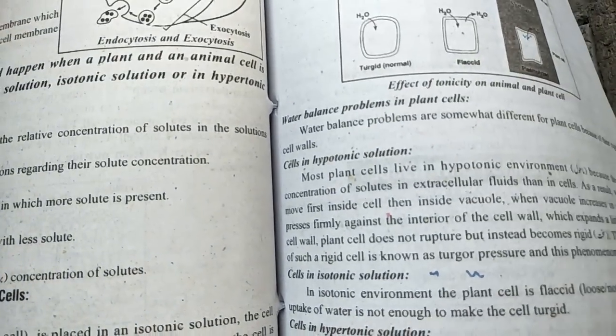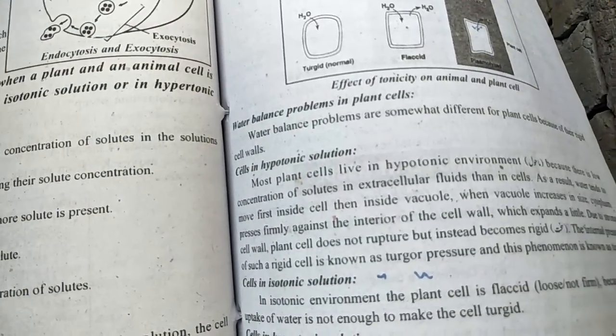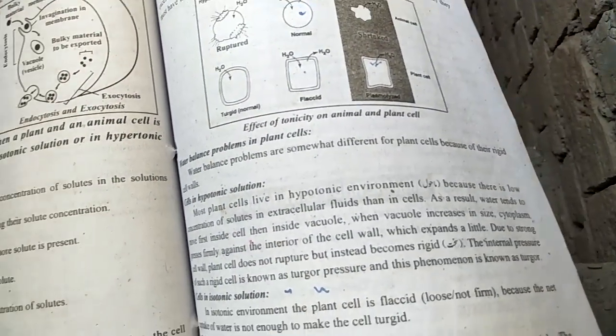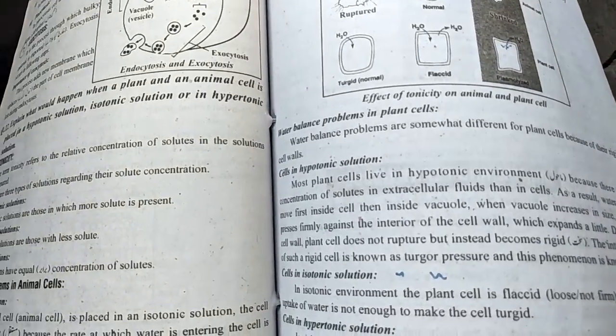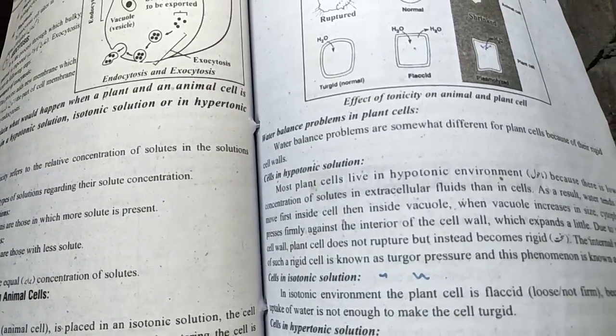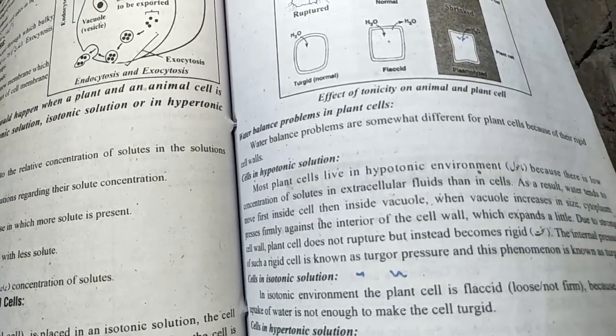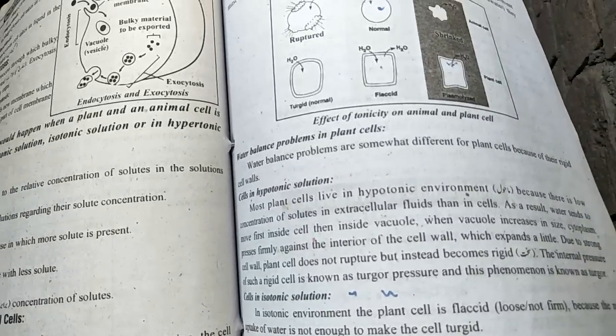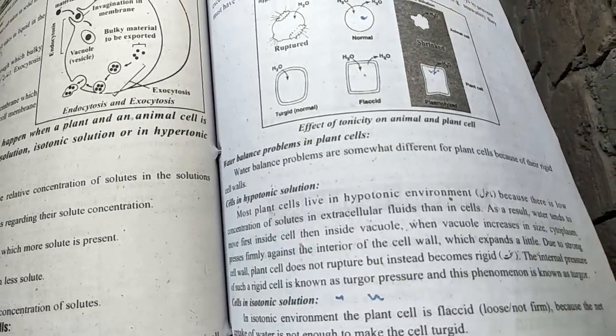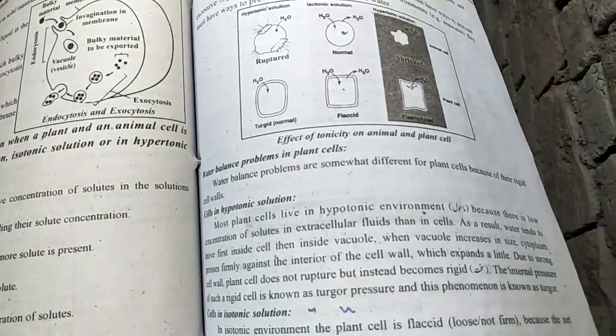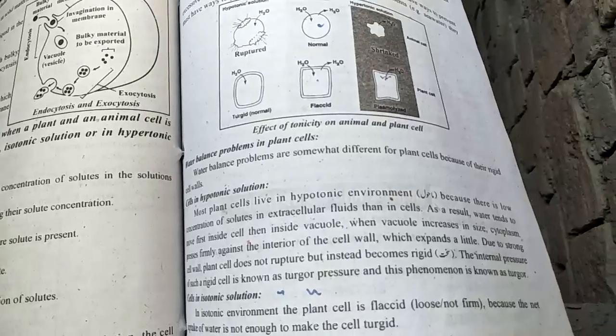Cells in hypotonic solutions: Most plant cells live in hypotonic environments where the concentration of solutes in the extracellular fluid is lower than in cells. As a result, water tends to move first inside cells and then inside the vacuole.